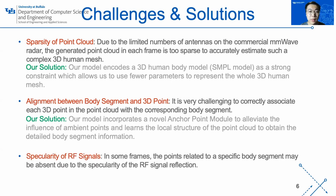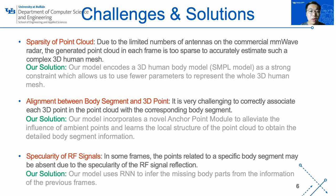The last challenge is the specularity of RF signals. In some frames, the points related to a specific body segment may be absent due to the specularity of RF signal reflection. Our solution is to use RNN to infer the missing body part from the information of the previous frames.